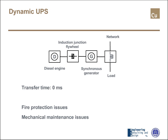Let's spend a few seconds on dynamic UPS and gensets. In a dynamic UPS, energy is provided by a diesel engine — and therefore fuel — and this diesel engine is coupled with an induction junction flywheel to a synchronous generator. The synchronous generator is coupled with the network and the load by way of a large inductance. So the energy is stored in something chemical — in this case fuel, not batteries — and the transfer time is zero, exactly like the double conversion UPS.